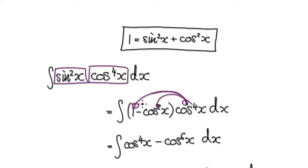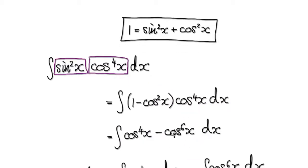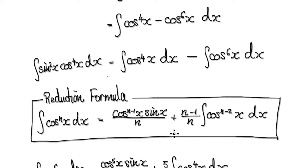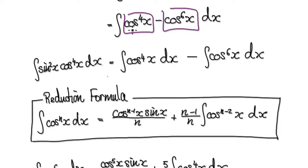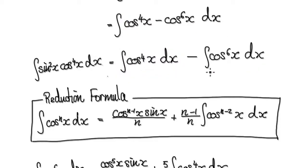Now multiply this out — this times this will then give you this, and then this times this will then give you this. So now you've got one block taking away another block. So break this up. You're doing one integral and then you take away another integral. Now apply the reduction formula to this block here.